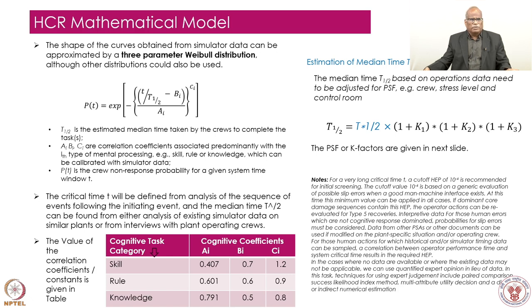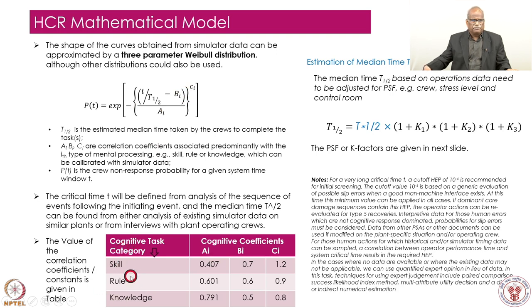The probability of non-performance equals exponential of minus [(t / t_median) raised to some power], where t is the actual time considered and t_median is the normalized median time. The parameters AI, BI, CI depend on the nature of the task — skill-based, rule-based, or knowledge-based. For a skill-based task: AI = 0.407, BI = 0.7, CI = 1.2. Similarly, for rule-based and knowledge-based tasks those values are available in the table. Once these three values are known along with t_median and the actual time t, we can estimate the non-performance probability for a given system.